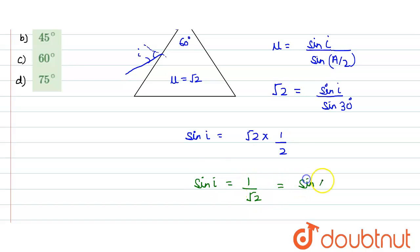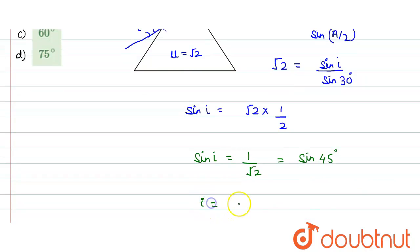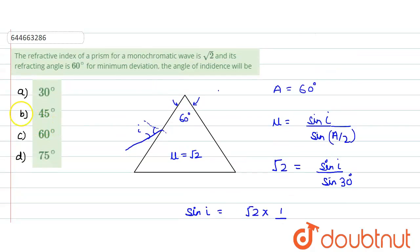It is for 45. So we can say that our angle of incidence would be equals to 45 degrees. So which option would be the correct option? B is the correct option, 45 degrees. Hope you understood this solution. Thank you.